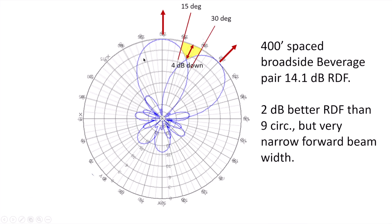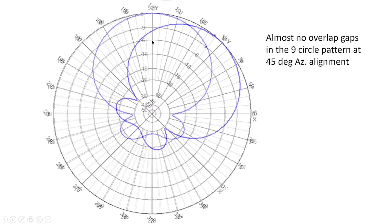With my 400-foot spaced broadside pairs the RDF is 14.1 — almost 2 dB better than the nine circle array, which is beneficial. But we end up with the gap problem. Whereas with the nine circle array, pointing north versus pointing at 45 degrees, we do not have that problem — there are almost no overlap gaps. There's no question this is a serious benefit to the nine circle array.